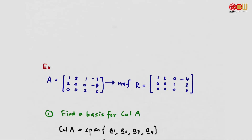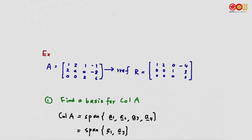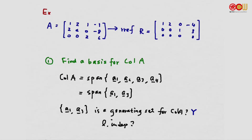How can we make them linearly independent? We know a subset of these vectors is linearly independent, and that subset has the same span as the bigger set. That subset is the pivot columns. The pivot columns — columns 1 and 3 — form a generating set, and they are linearly independent, so this is a basis for the column space of A.